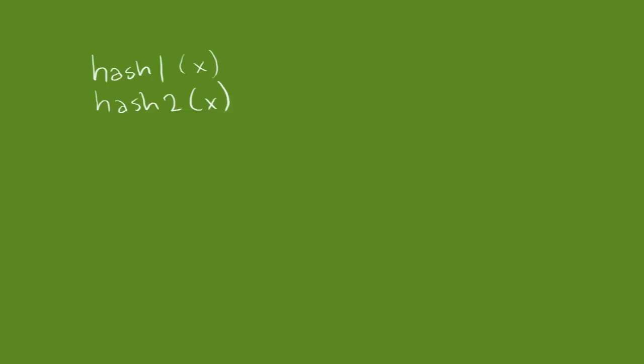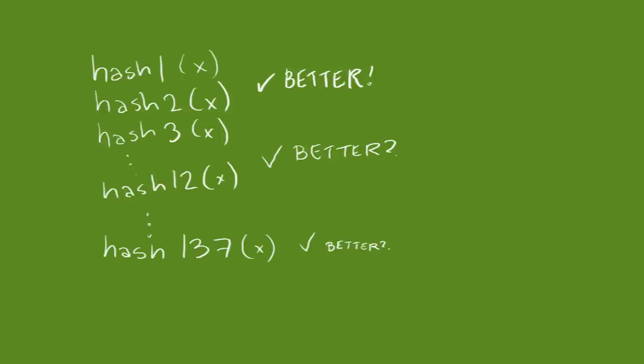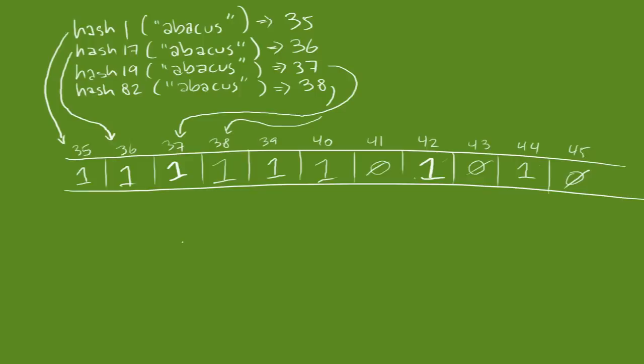So if one or two extra hash functions is better, why not use dozens of them? Even hundreds of them? Well, there's such a thing as going overboard. If we set too many bits in our array, the chances of an unwanted collision start to go up again. There's a sweet spot.